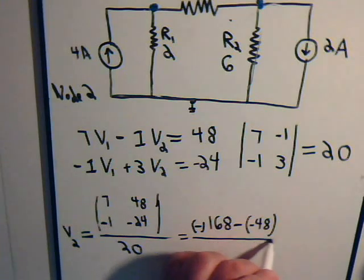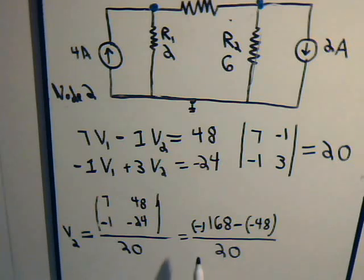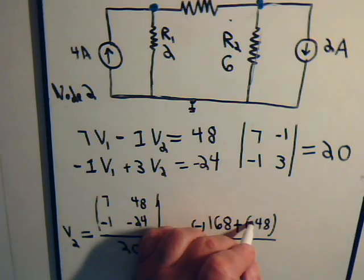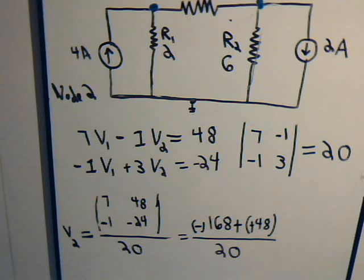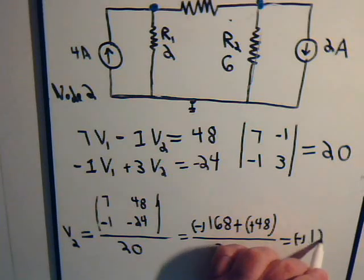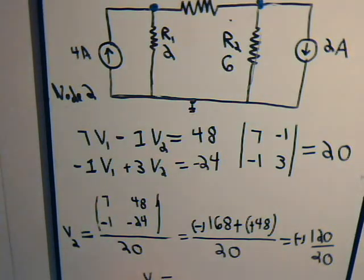So this is -168 plus positive 48, so up on top here we have -120 divided by 20. So V2 is -6 volts.